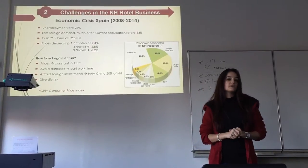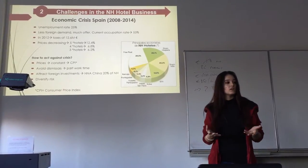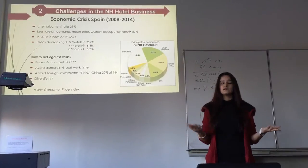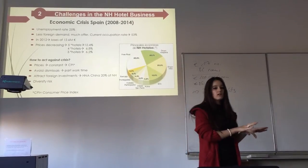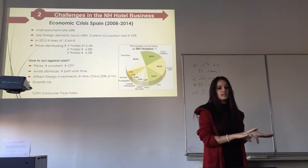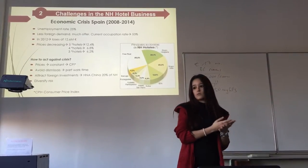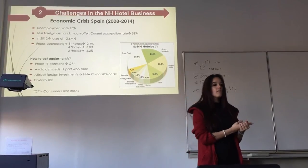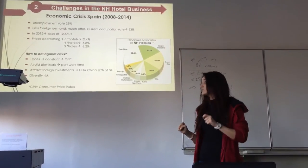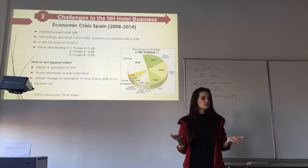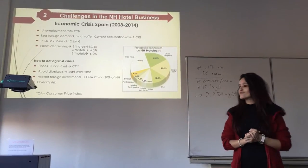We're also trying to avoid dismissals because we care about our workers and don't think it's fair for them to lose jobs because of the crisis. For example, if a hotel has four people working in reception ten hours per day, instead of dismissing two of them, we divide their work time — they work five hours per day instead of ten — and keep all of them. The remaining hours can be used in our training programs or for another job to help them recover from the crisis.